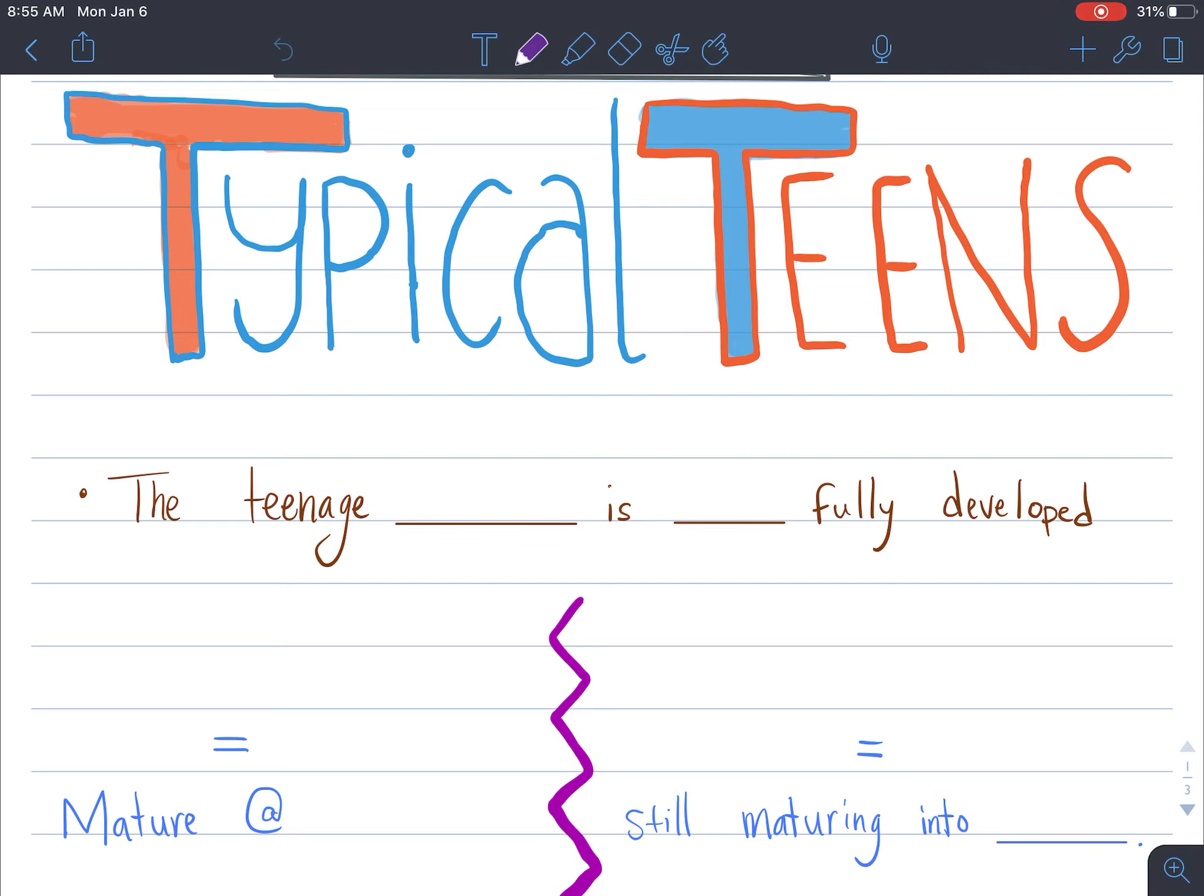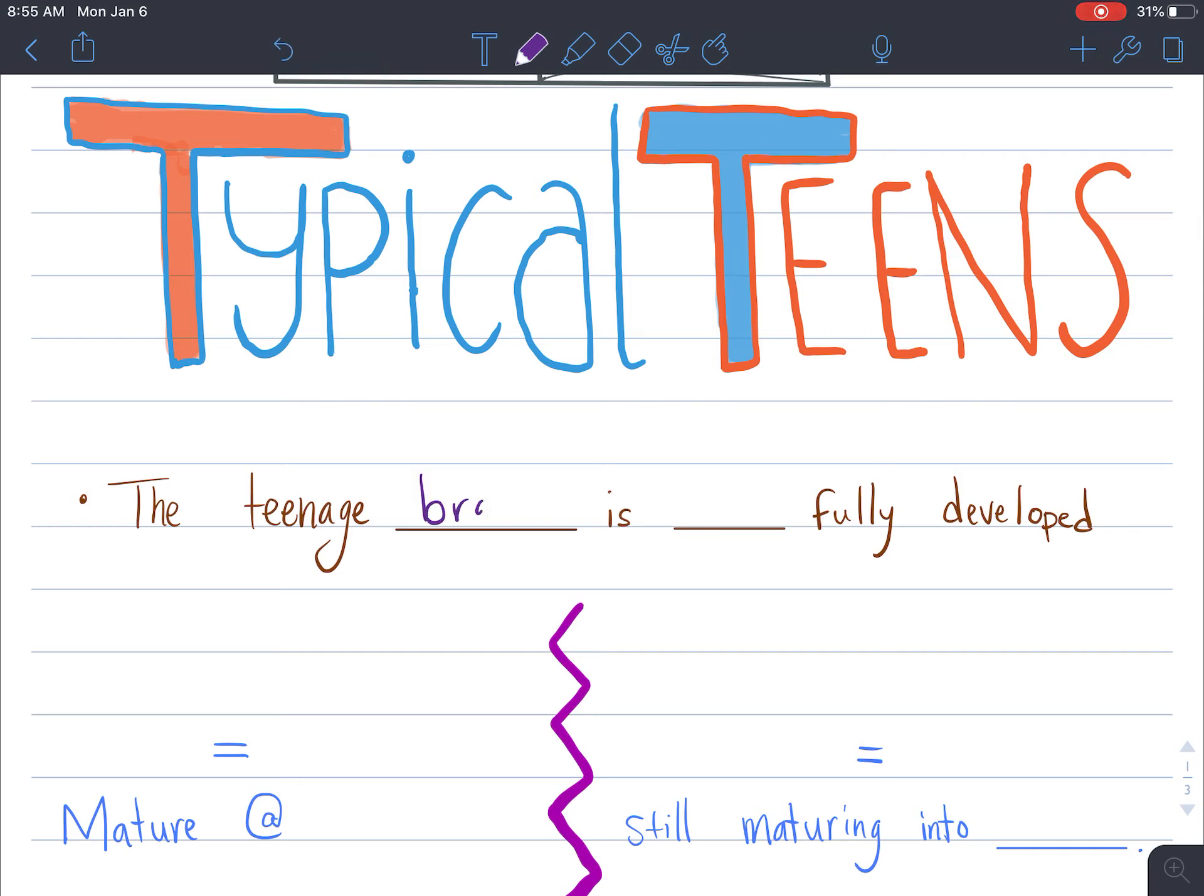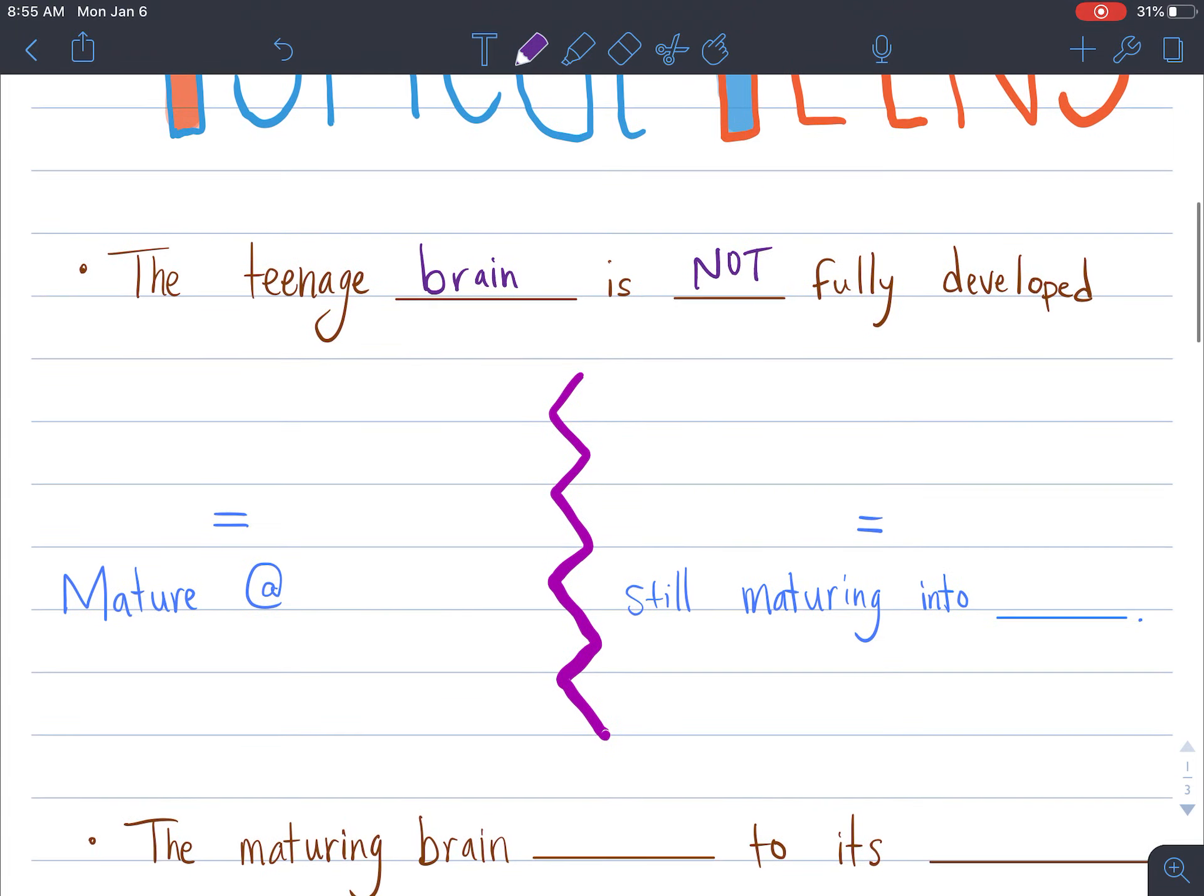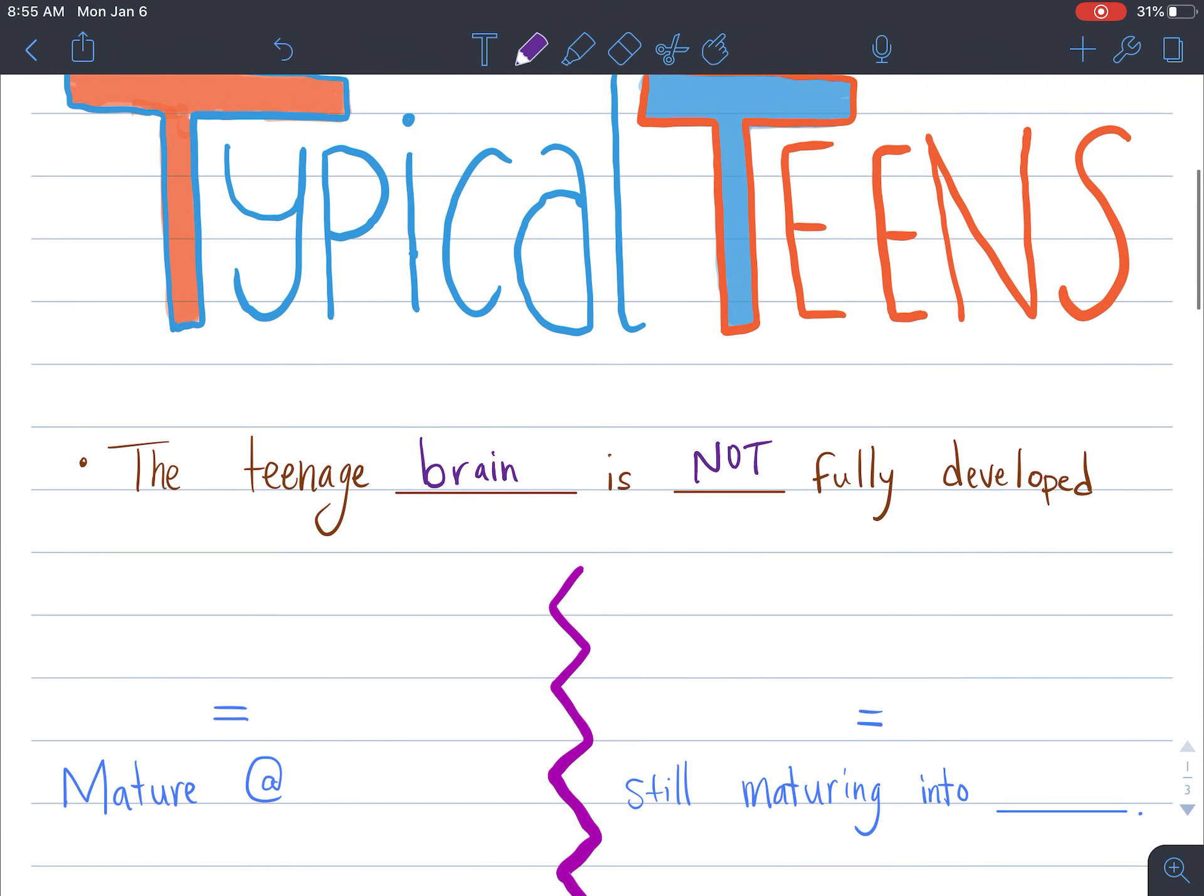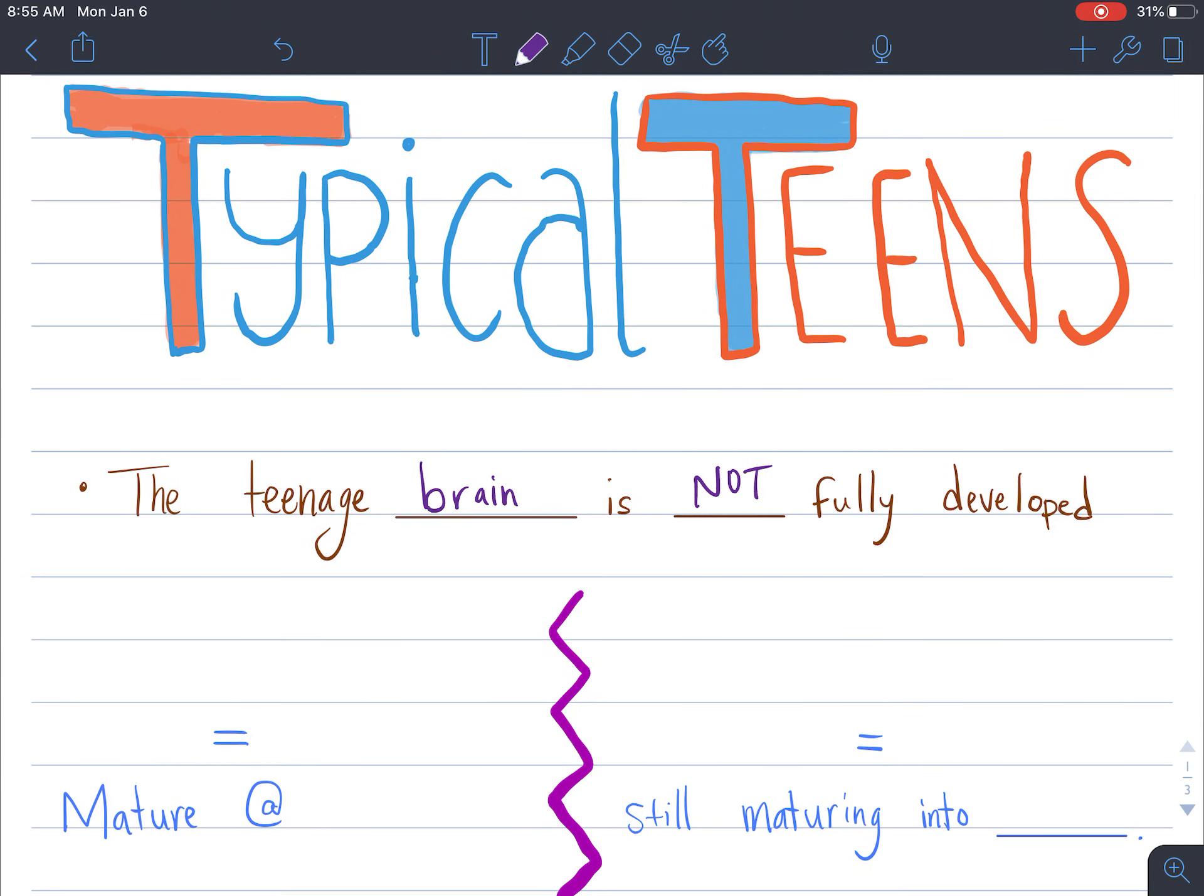The first thing that we're going to remind ourselves is that the teenage brain is not fully developed, it is still growing. Now there's different parts of our brain though, and it's not like the whole brain is still maturing.